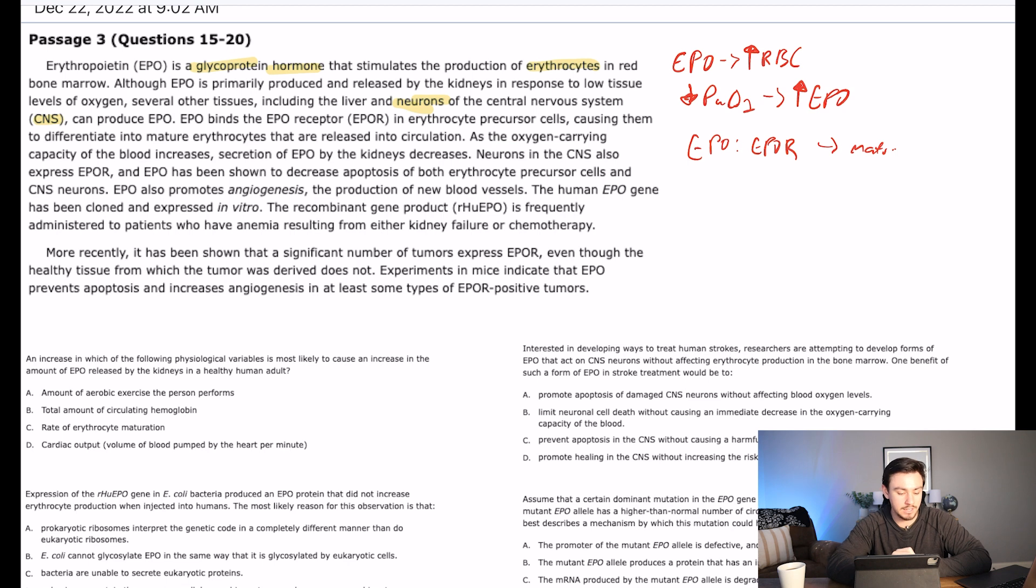So as the oxygen carrying capacity of blood increases, secretion of EPO by the kidneys decreases. That's this relationship right here, just the inverse of that. It says neurons in the CNS also express EPO-R, and EPO has been shown to decrease apoptosis. So increased EPO leads to decreased apoptosis to both erythrocyte precursor cells and CNS neurons. EPO also promotes angiogenesis, which is the production of new blood vessels. The human EPO gene—genes, that's a basic science, right, a sequence of DNA that codes for a protein...